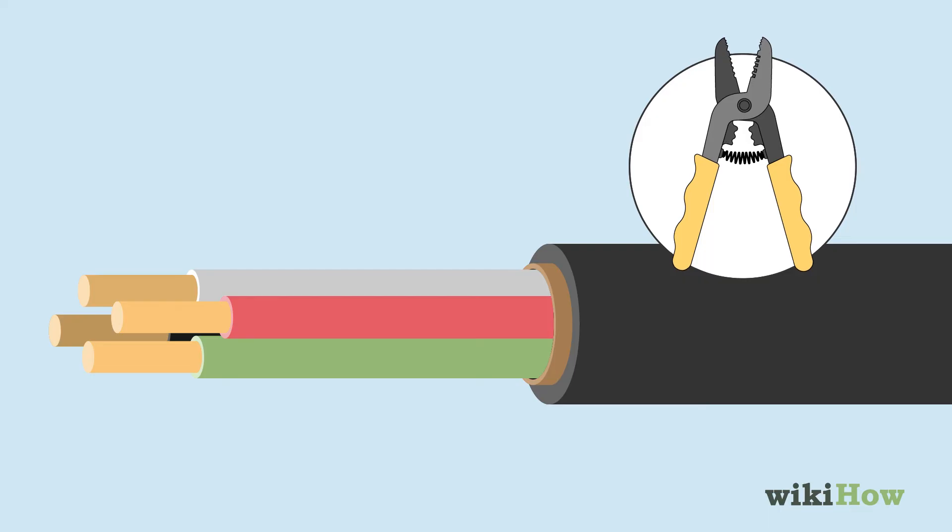Strip the outer coating off of the last 1 to 2 feet, 30 to 61 centimeters, of the end of the cable that will attach to the circuit box. Then strip half an inch, 1.3 centimeters, of insulation off of the ends of each of the wires.